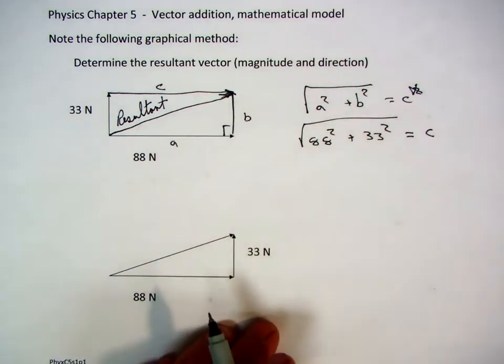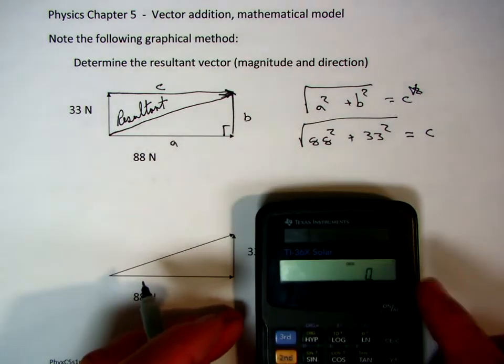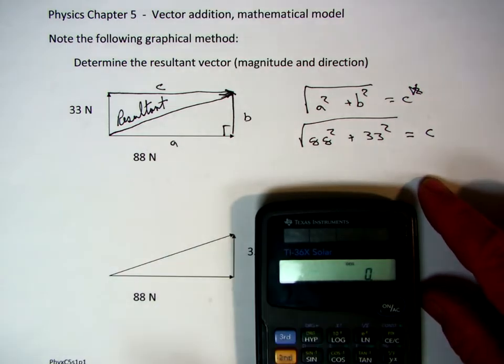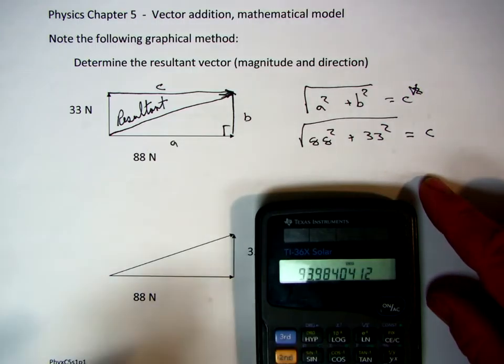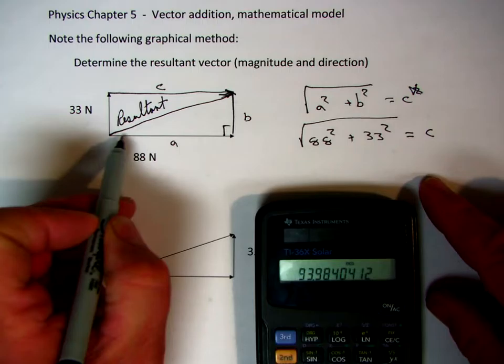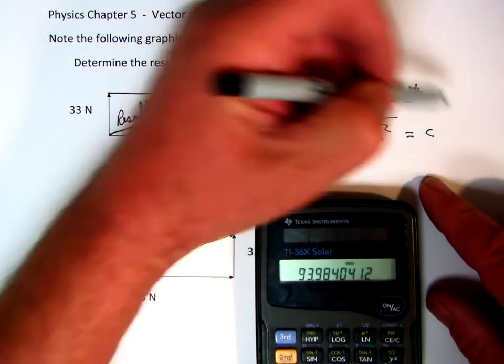So going ahead and doing that, adding my calculator. 88 squared plus 33 squared equals, and then I hit the square root of that function. My length is going to be about 94 to two significant figures.